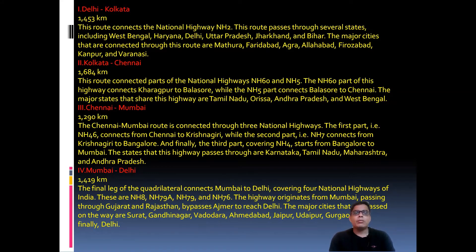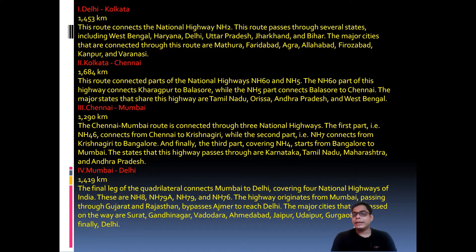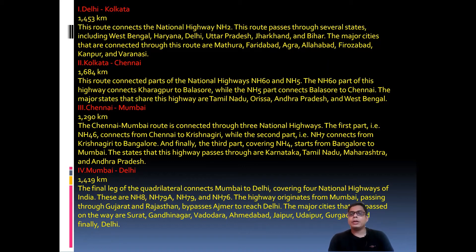The Chennai to Mumbai segment is approximately 1,290 kilometers. This route connects via multiple national highways. NH 46 connects Chennai to Krishnagiri, NH 7 connects Krishnagiri to Bangalore, and NH 4 connects Bangalore to Mumbai. The highway passes through the states of Karnataka, Tamil Nadu, Maharashtra, and Andhra Pradesh.